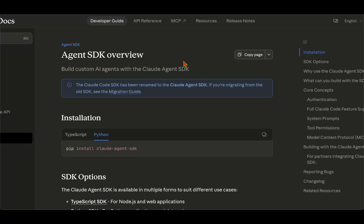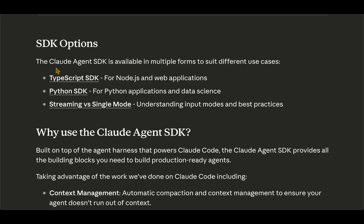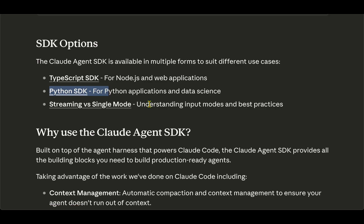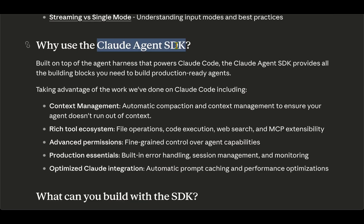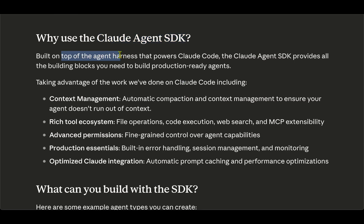We now have Claude Agent SDK. If you want to build custom AI agents with fine-grained control, you need to use Claude Agent SDK. All it is is the renaming of Claude Code SDK to Claude Agent SDK. It's available in multiple forms — TypeScript SDK, Python SDK, and streaming with a single mode. If you don't just want to use Claude Code but want fine-grained control and want to build on top of the agent harness, then you need Claude Agent SDK.